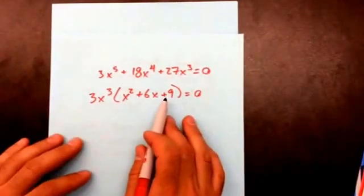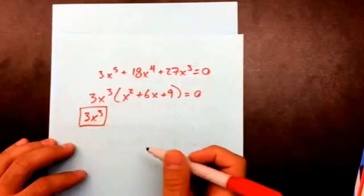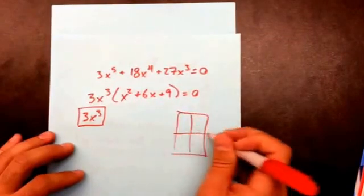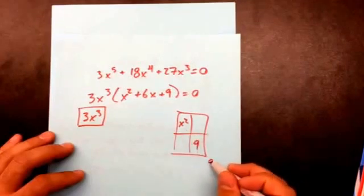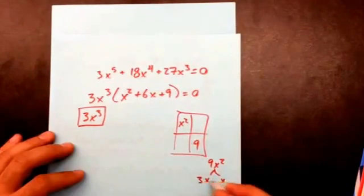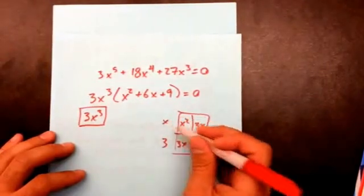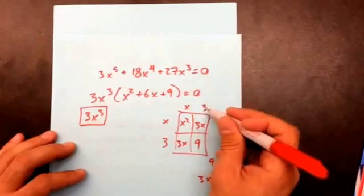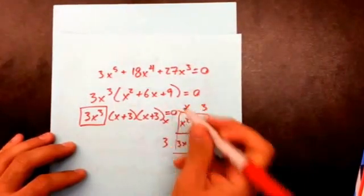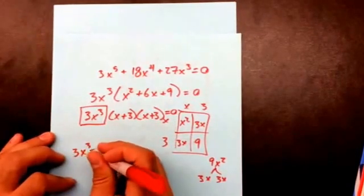This is a perfect square trinomial, but in case it's not obvious, I'm going to use the box method — and make sure you don't lose the factored-out part in front. My first term goes here, my last term goes here. I need two things that multiply to give the product and add to the middle term — that's 3 and 3. So I get (x + 3)(x + 3). If any part equals zero, set each factor equal to zero.